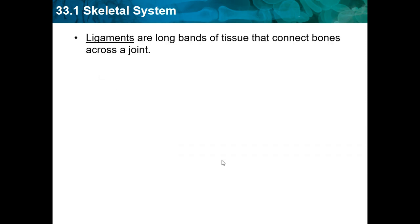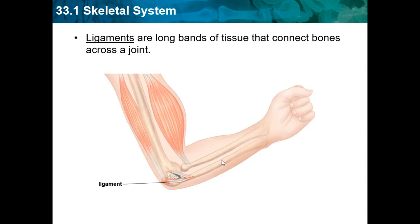Ligaments are long bands of tissue that connect bones across a joint. So ligaments are kind of like cartilage, but specifically at a joint. Cartilage joins bone to bone generally, while a ligament is a long band of tissue that connects across a joint.